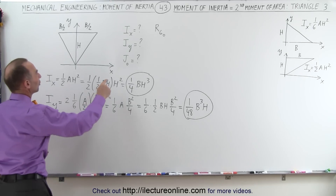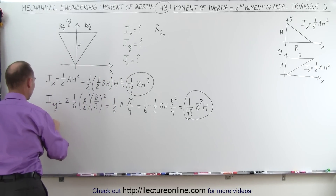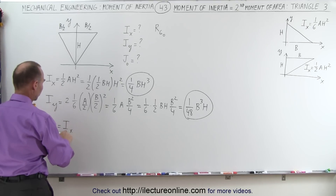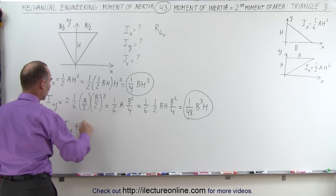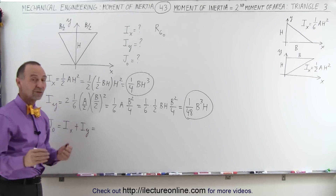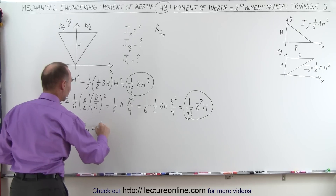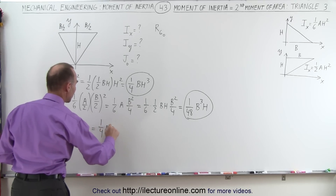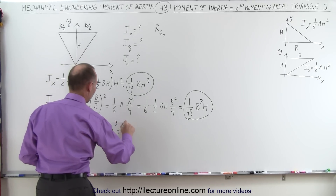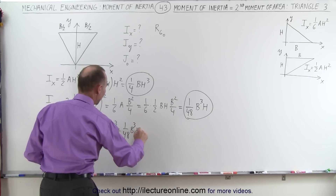Now let's find the moment of inertia relative to the origin. We know that equation becomes simply equal to the sum of the moment of inertia relative to the x-axis plus the moment of inertia relative to the y-axis, so we simply add these two together. That becomes 1/4 bh³ plus 1/48 b³h.